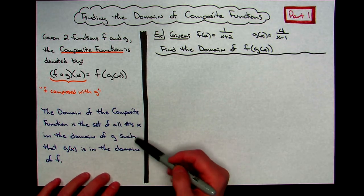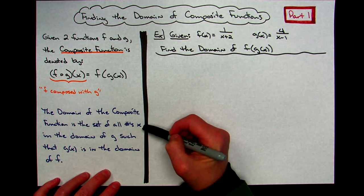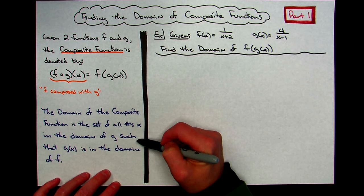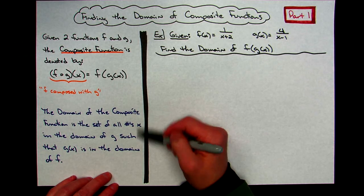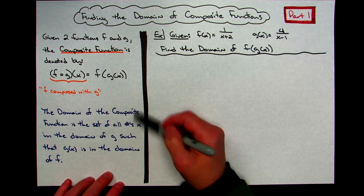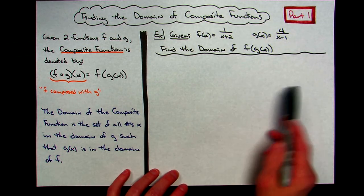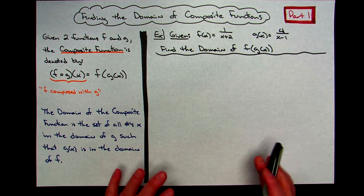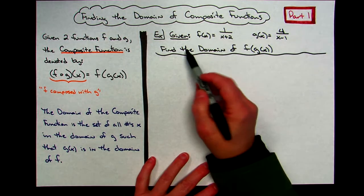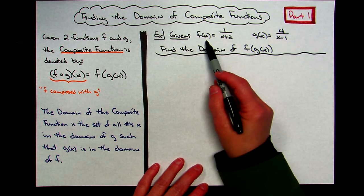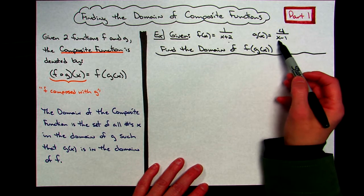To give you a formal definition of the domain: the domain of a composite function is the set of all numbers x in the domain of g, such that g of x is in the domain of f. As we walk through this example, hopefully everything's going to fall into place and that's going to make sense. For this example, we've been given f of x as 1 over x plus 2, and g of x as 4 over x minus 1.